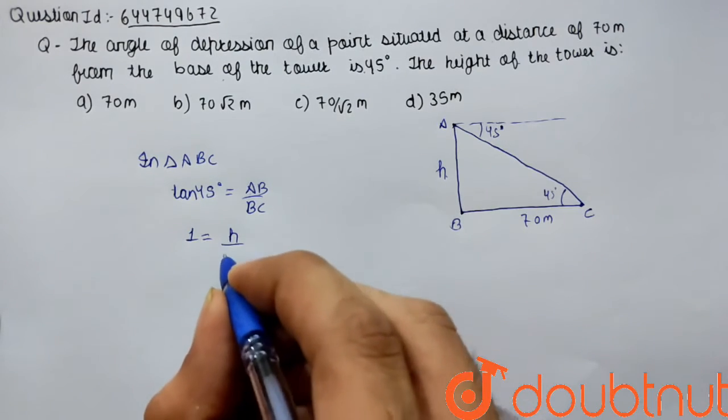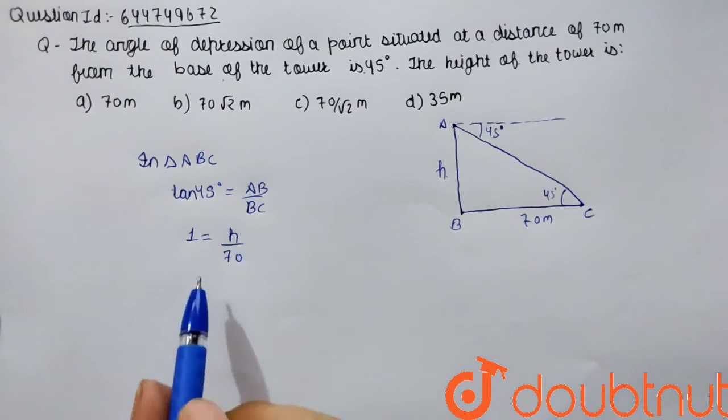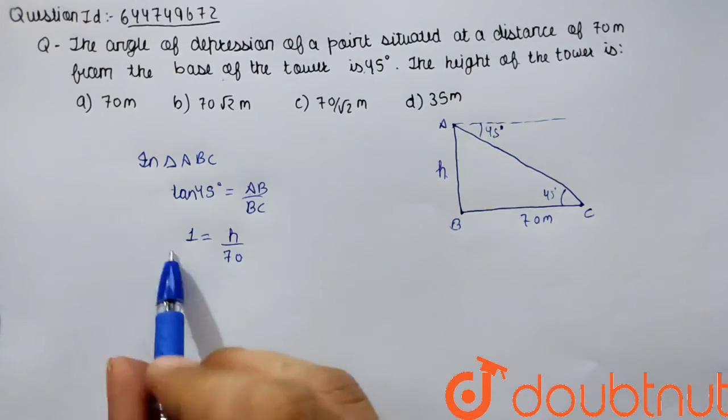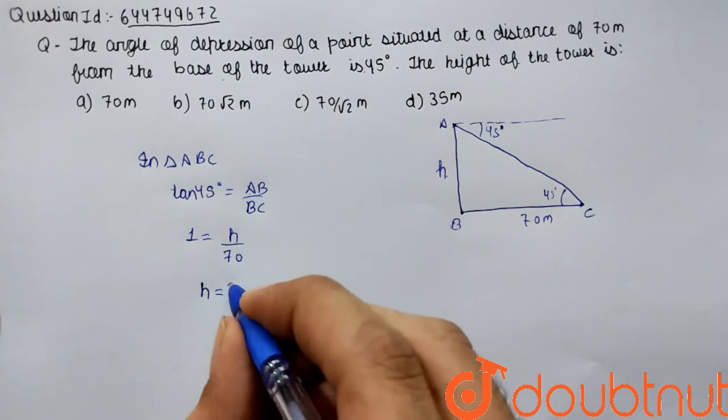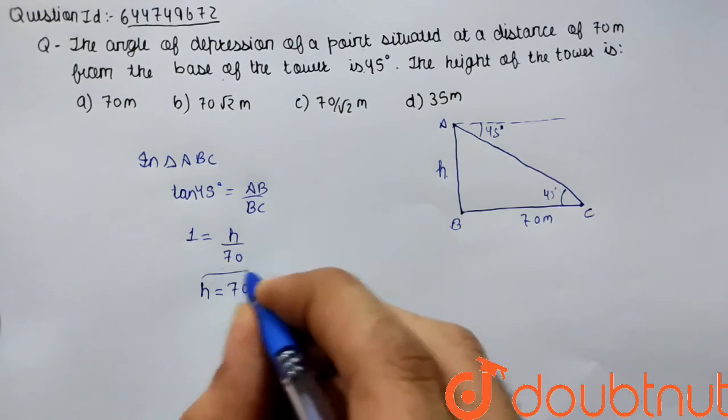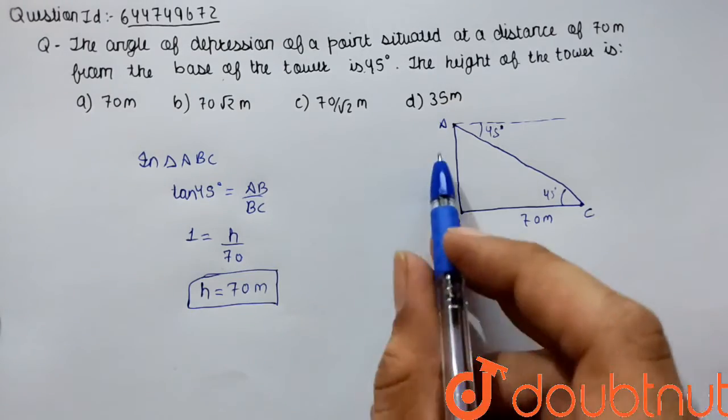AB is h and BC is 70, right? So we have to find the height of the tower, so cross multiply it. So height of the tower, which is h, is found to be 70 meters.